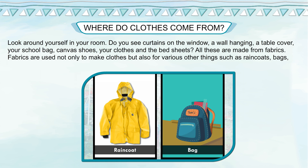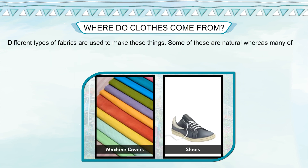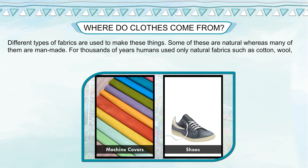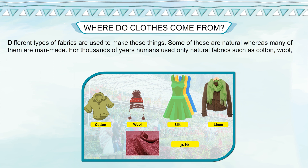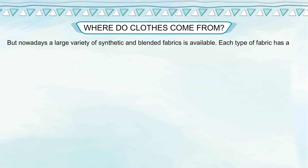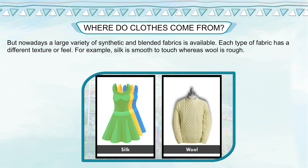Fabrics are used not only to make clothes but also for various other things such as raincoats, bags, machine covers, and shoes. Different types of fabrics are used to make these things. Some of these are natural whereas many of them are man-made. For thousands of years humans used only natural fabrics such as cotton, wool, silk, jute, and linen, but nowadays a large variety of synthetic and blended fabrics is available. Each type of fabric has a different texture or feel — for example, silk is smooth to touch whereas wool is rough.